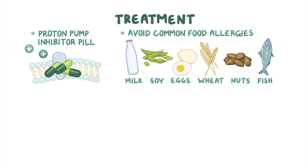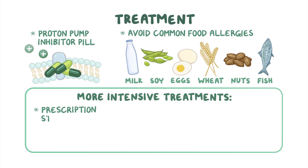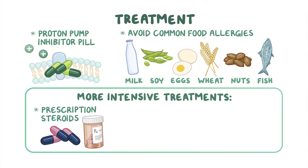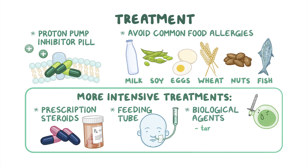If symptoms continue after initial treatments, more intensive treatments may be required. These other treatments include prescription steroids to further reduce inflammation and inserting a feeding tube to provide all meals in a liquid form directly into the stomach to avoid the esophagus coming in contact with any potential allergens. A number of biological agents, especially those that directly target eosinophils or allergic hypersensitivity, are now being developed for the treatment of eosinophilic esophagitis.